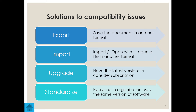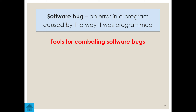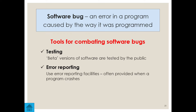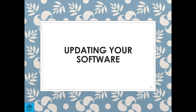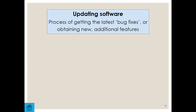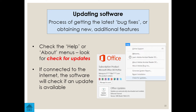Software is not without its issues — software bugs are errors in a program caused by the way it has been programmed. Tools for combating bugs include testing with beta versions and error reporting, which is why we keep our software up to date. Updating software means getting the latest bug fixes or obtaining new features. In Office, for example, you can check Help and go to 'Check for Updates,' and you can do the same with Windows.